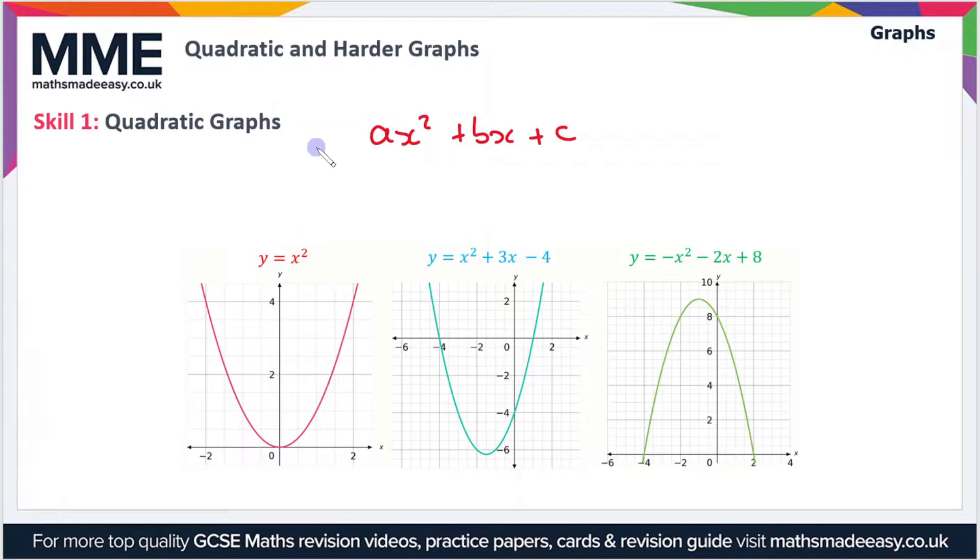Another thing to point out in quadratic graphs is that the graphs are curved and they can either be U or inverted U shaped. That depends on the a term, the coefficient of x². If a is greater than zero, like one in y = x², then the graph that you get is U-shaped.